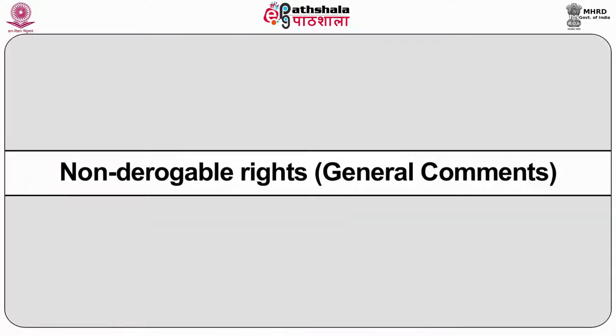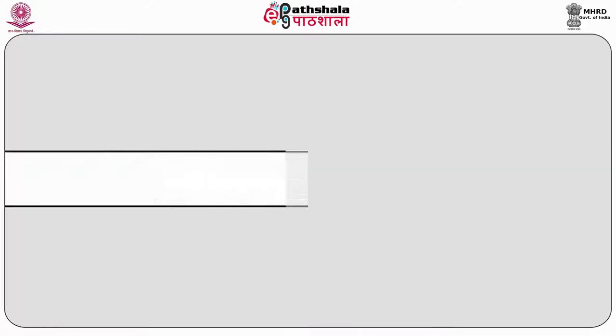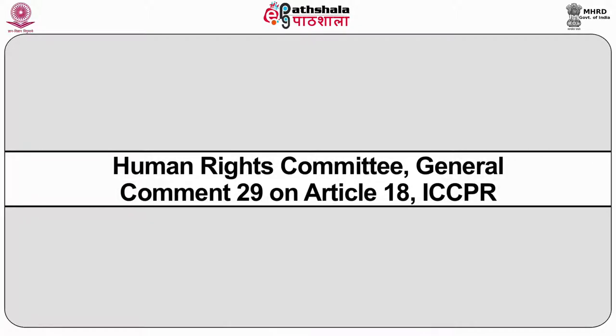Non-derogable rights: General Comments of the Human Rights Committee. General Comment 29 on Article 4 of the ICCPR. In addition to Article 4 of the ICCPR, the general comments of the HRC have not added to the list of non-derogable rights. However, the authoritative interpretation in General Comment 29 states that even in those provisions of the ICCPR that are not listed as non-derogable, there are elements that cannot be subject to lawful derogation,